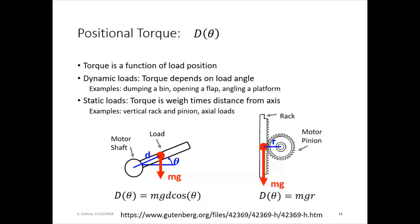In this case, it doesn't actually depend on θ because no matter what is the position of the motor, the distance of the load away from that axis of rotation, it's constant. It's always going to be r.